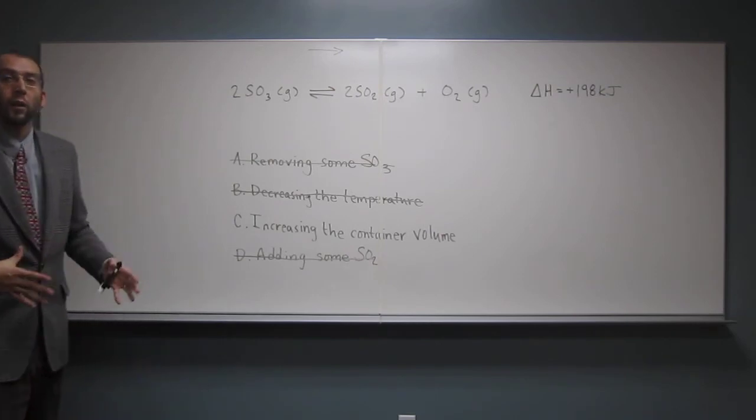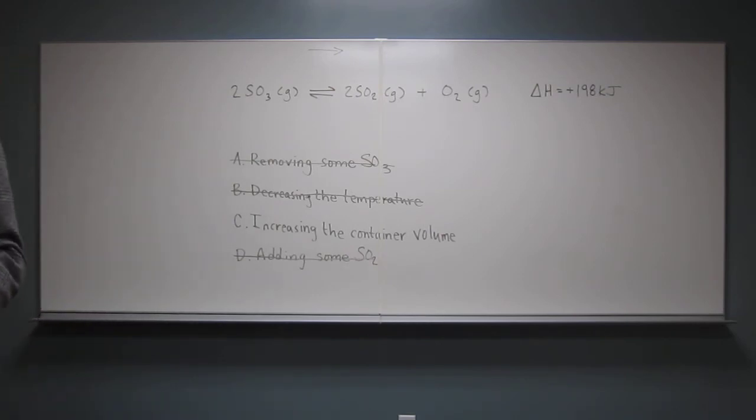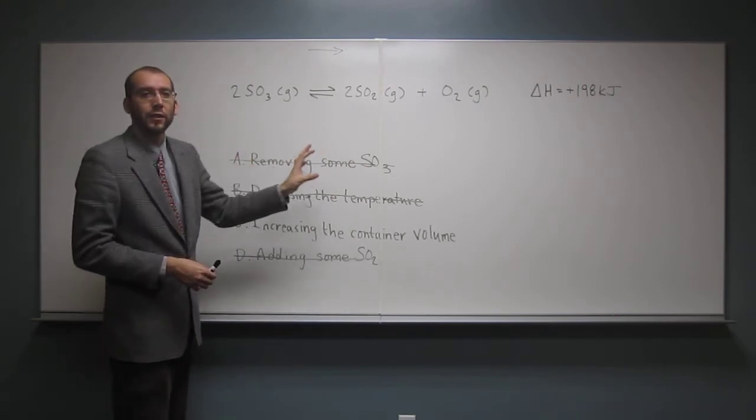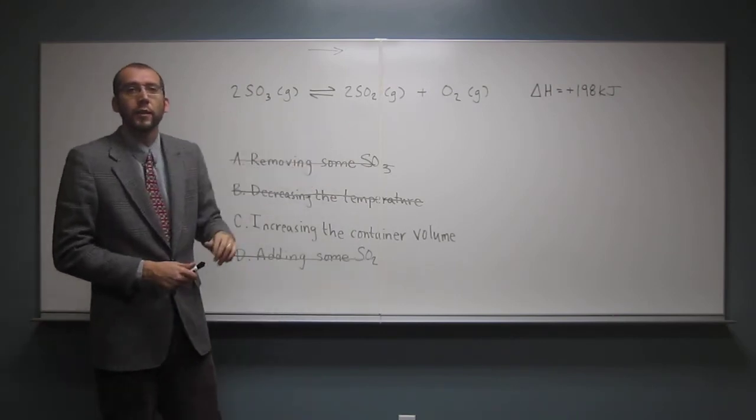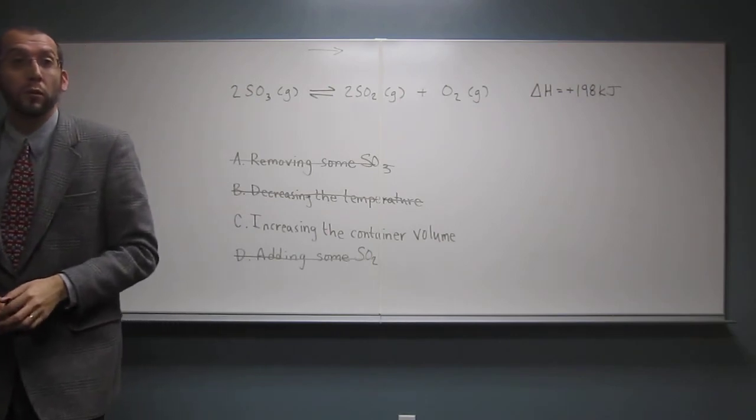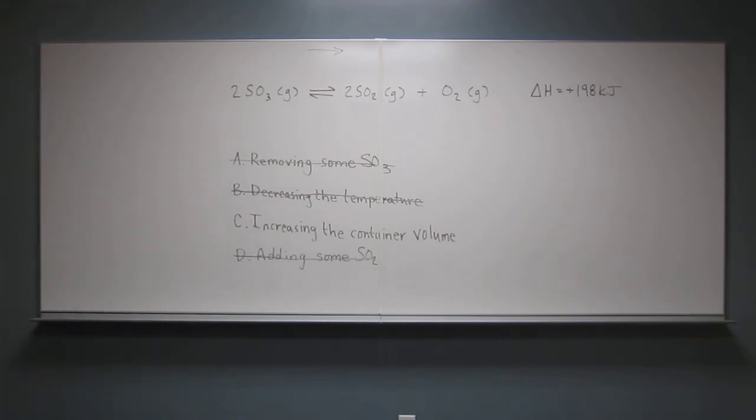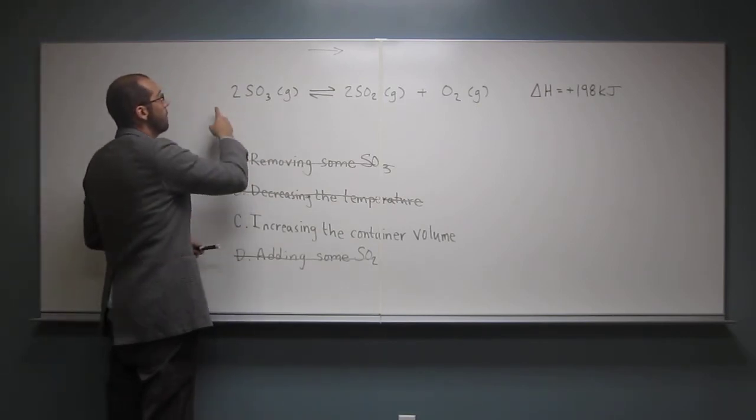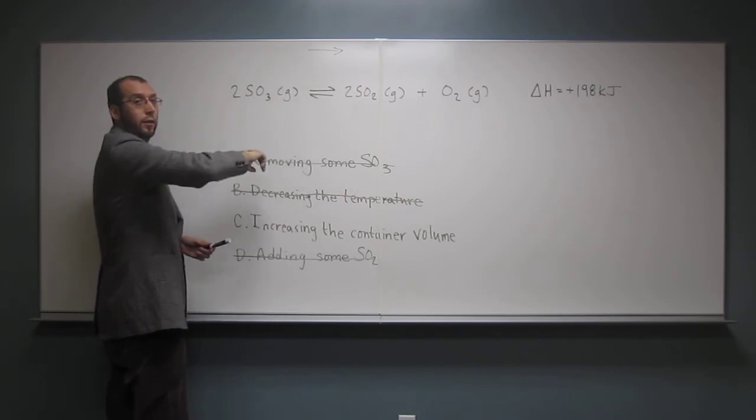Remember molar volume, that all gases occupy 22.4 liters at standard temperature pressure. So at any other pressure, we can think of these as all ideal gases. They're all occupying the same amount per mole, 22.4 liters. So if we look here, how many moles of gas do we have on the left side of the reaction?